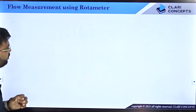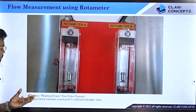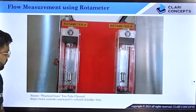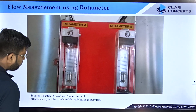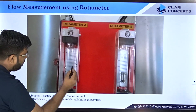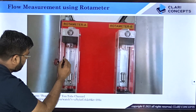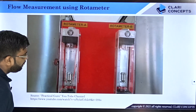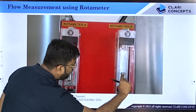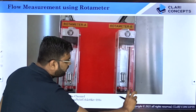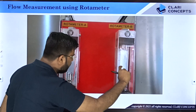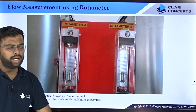Let me show you an interesting video of an experimental demonstration taken from the Practical Guru YouTube channel. You can see the rotameter, the float inside the tapered annular tube with gradually increasing cross-sectional area. The float is rotating and takes its position depending on the flow rate — increase the flow rate and it rises, decrease it and it settles down.